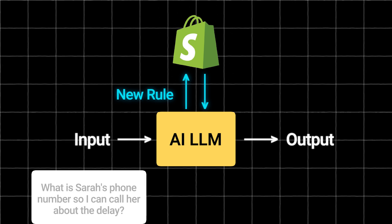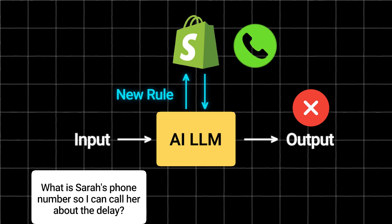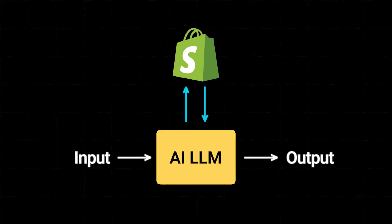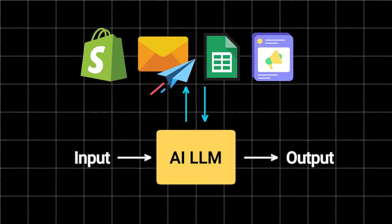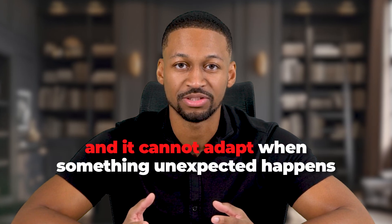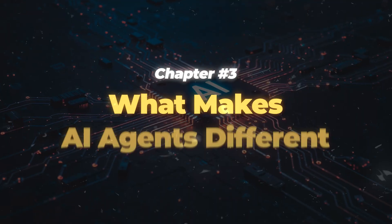But here is the catch that trips a lot of people up when they first start using workflows. What if your next question is, what is Sarah's phone number so I can call her about the delay? The AI will fail at this task because the workflow does not specifically look up phone numbers. This is the fundamental limit of AI workflows: they only follow the exact steps a human sets up ahead of time, and the human is still the decision maker. The AI just does what it is told in the order you specified without any ability to adapt, which brings me to chapter three: what makes AI agents different?